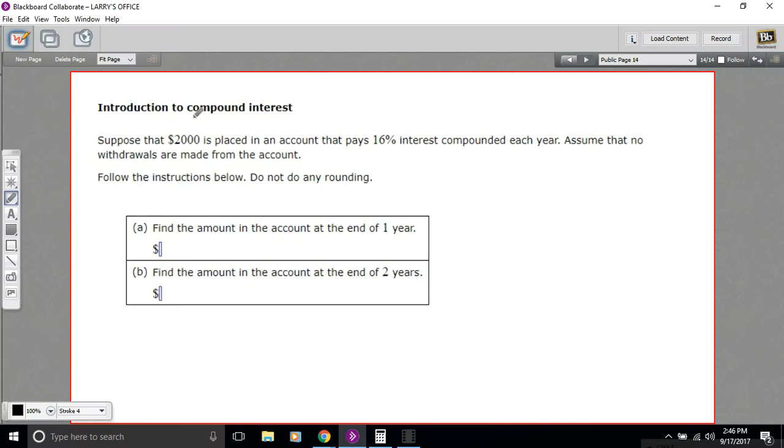Here we have a problem about compound interest. Compound interest happens when you have an account where the bank or financial institution promises to pay you a certain percent of interest. So every year you get a little bit of money, which is a percent of what you have deposited. And then as that money grows in there, the percent is on the bigger amount.